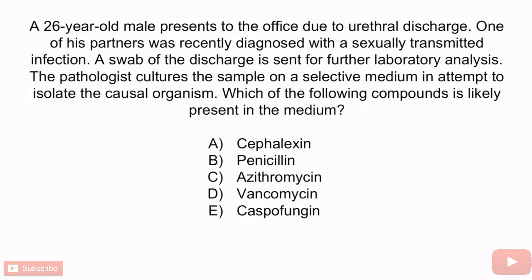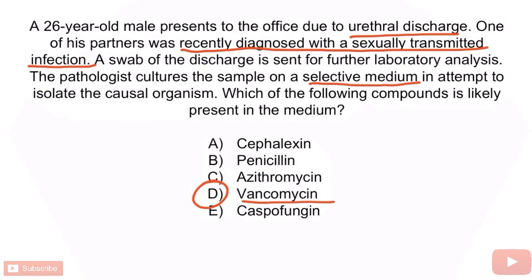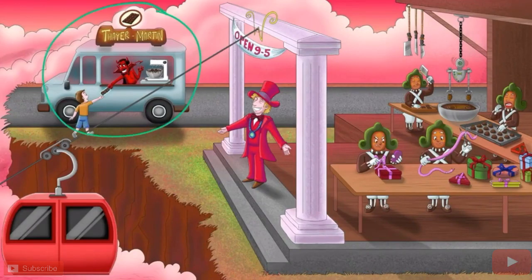From the question stem, this patient has urethral discharge and a partner recently diagnosed with a sexually transmitted infection — a classic description of Neisseria gonorrhea. The selective medium described is suggestive of Thayer Martin agar. As we just discussed, Thayer Martin agar contains vancomycin, nystatin, polymyxin, and trimethoprim. So the correct answer is D, vancomycin. From the image, recall that the van food truck should help you remember that vancomycin is present in Thayer Martin agar.